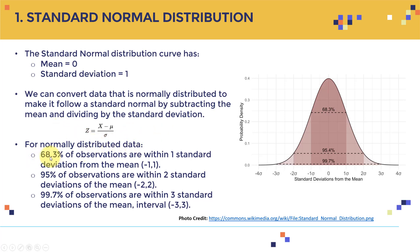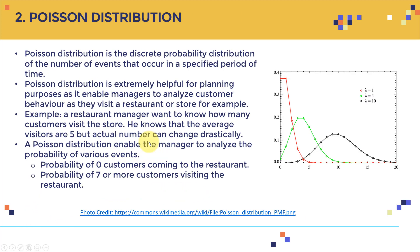For normally distributed data, 68.3% of observations fall within one standard deviation from the mean — between minus one and plus one sigma. Between two standard deviations you find 95.4% of observations, and 99.7% of observations fall within three standard deviations from the mean.